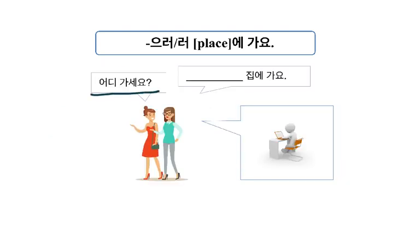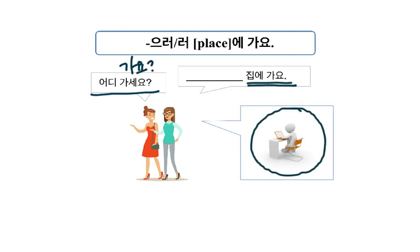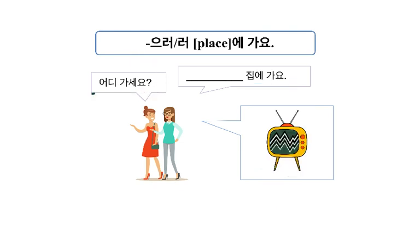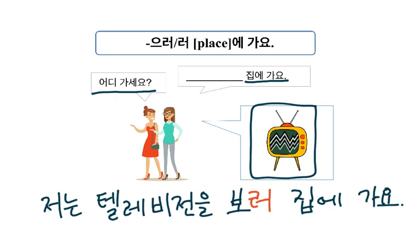어디 가세요? 어디 가요? 집에 가요. In order to do this action — I go home to do my homework. 숙제하러 집에 가요. 어디 가세요? 집에 가요 — in order to watch TV. 저는 텔레비전을 보러 집에 가요. I go home to watch TV.